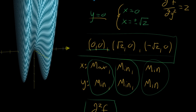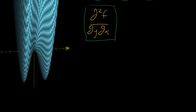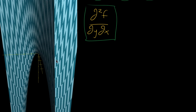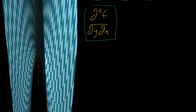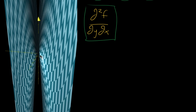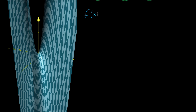But that's not enough. You need to take into account the mixed partial derivative term. To see why, let me pull up another example. The graph you're looking at clearly has a saddle point at the origin. The equation for this function is f(x,y) equals x squared plus y squared plus four times xy.